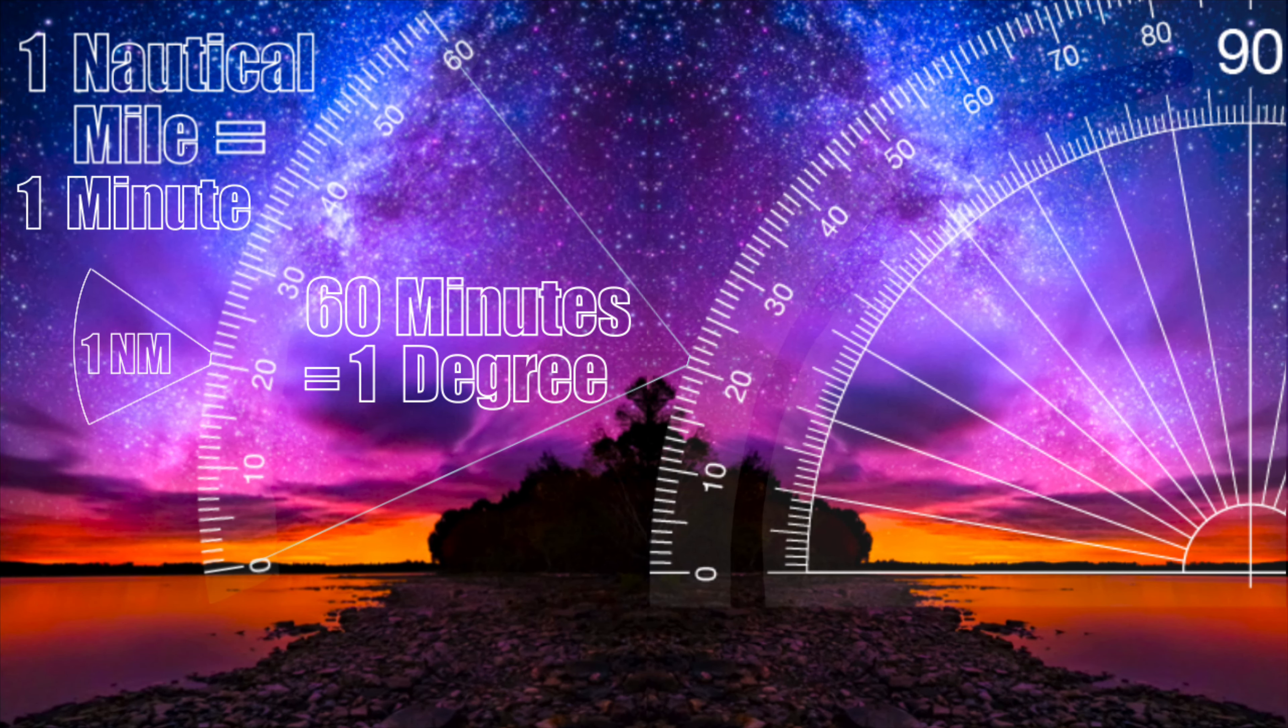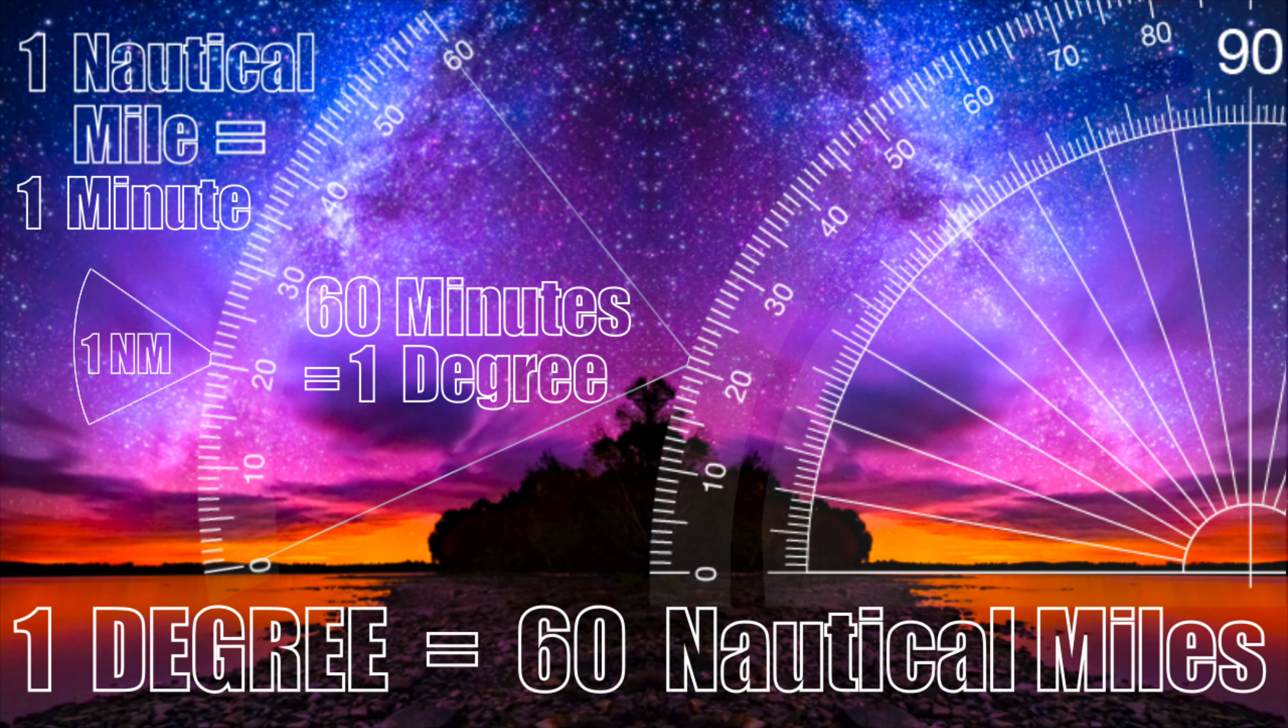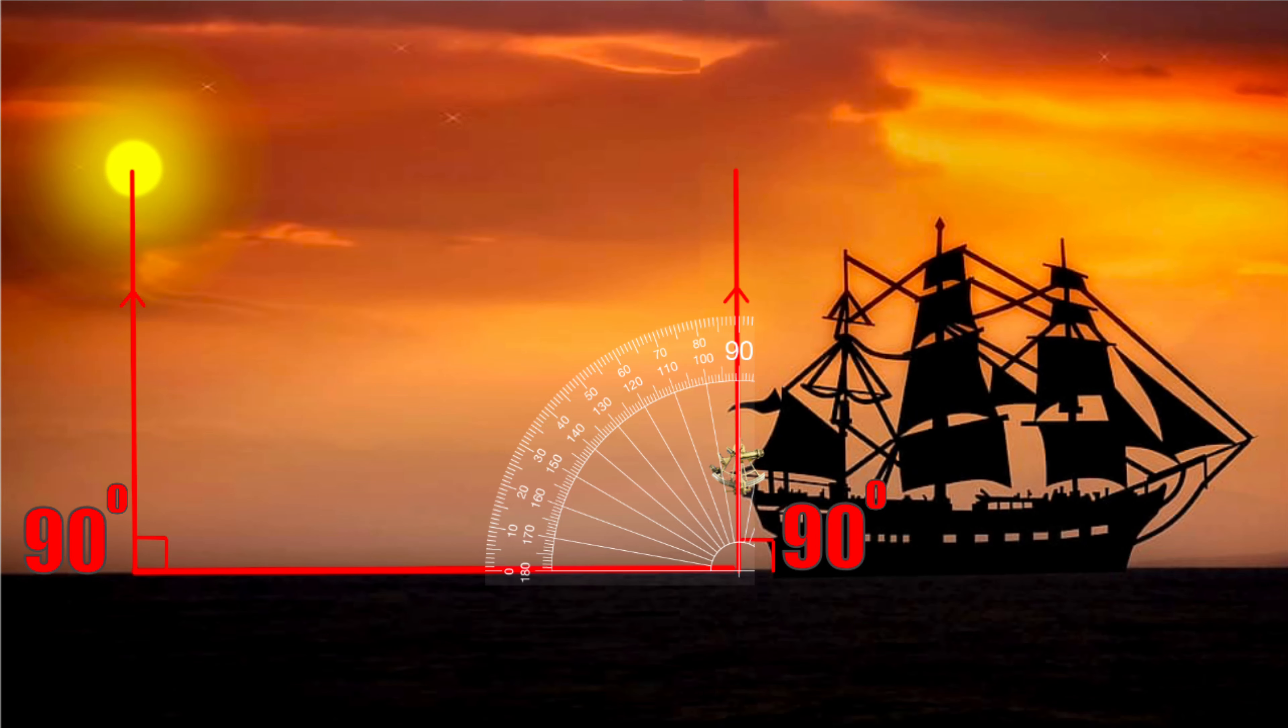One nautical mile equals one minute of degree. 60 minutes of degree equals one degree, so one degree equals 60 nautical miles. Degrees are measured with angles, and angles to the celestial objects measure a difference in degrees from a starting point of 90 degrees.